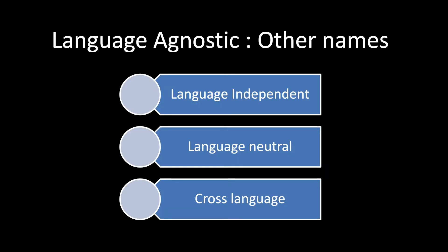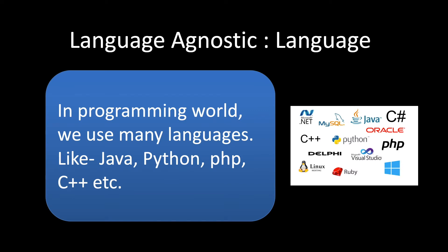Language agnostic is also known by other names like language independent, language neutral, or cross-language. In programming, we have many languages used to solve certain problems — Java, Python, PHP, COBOL. There are times when solving a problem where the language is not important — that is when we say it's language agnostic.